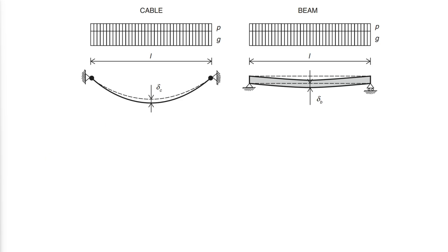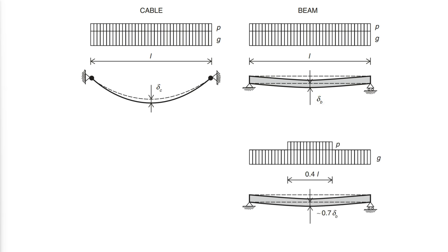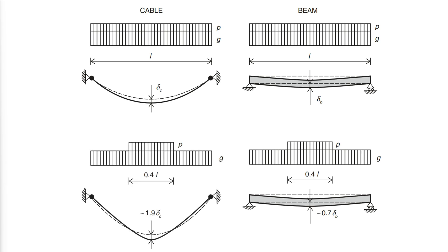For a beam, the maximum deflection will occur under maximum live load, meaning when live load is applied over the entire span, and for live load in only the central 40% of the span, the deflection will be reduced to approximately 70% of the maximum value. It is seen that if experience based on the behavior of beams were transferred uncritically to the cable case, it would be assumed that maximum deflection occurs under full-span live load. This would lead to an underestimation by a factor of close to 0.5, as the most critical non-uniform loading case will increase the mid-span deflection of the cable to almost twice the value for uniform live load across the entire span.